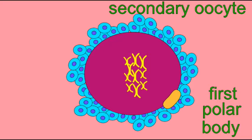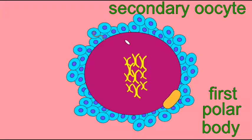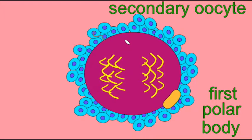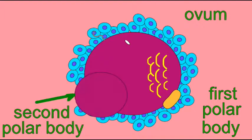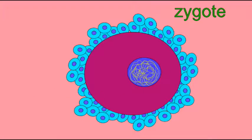In males, these will specialize their shape and become spermatozoa. In females, the cell divisions were unequal, and most of the resources in the original oocyte were inherited by one of the daughter cells, which becomes the ovum, which is fertilized, while the other cells become non-functional polar bodies, which will disintegrate.